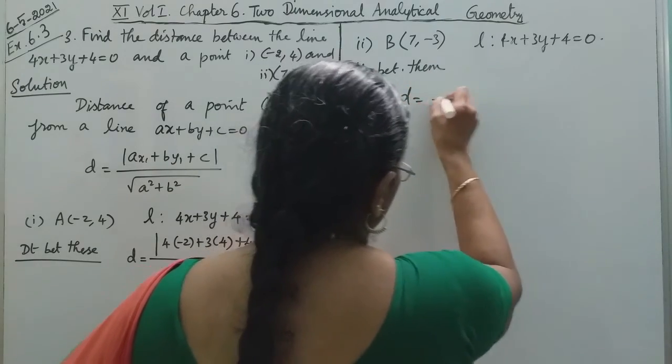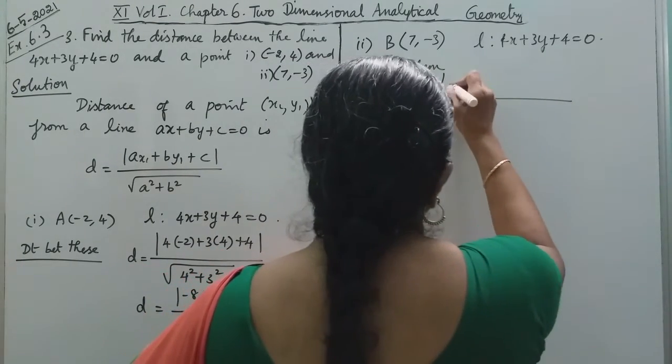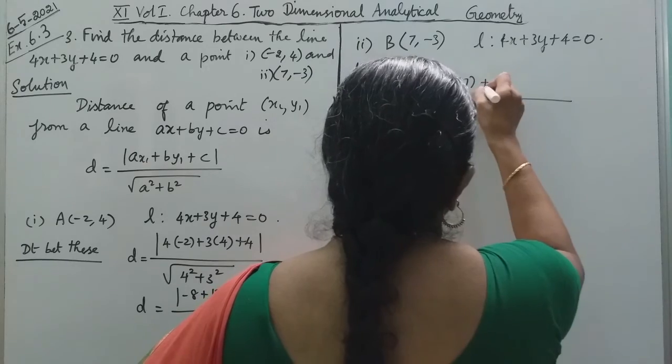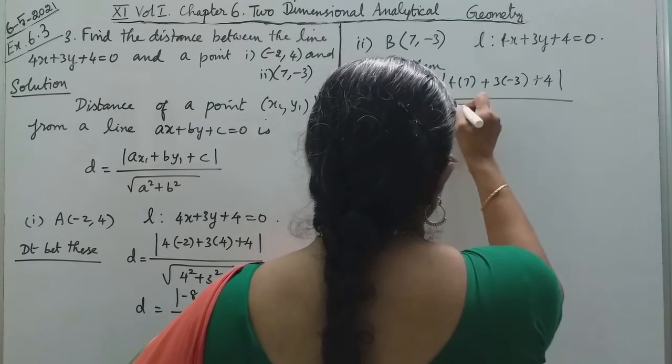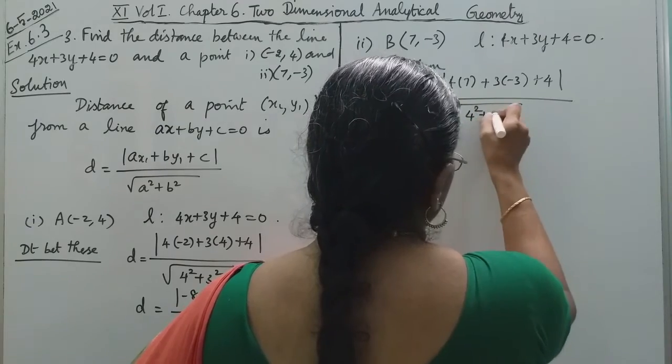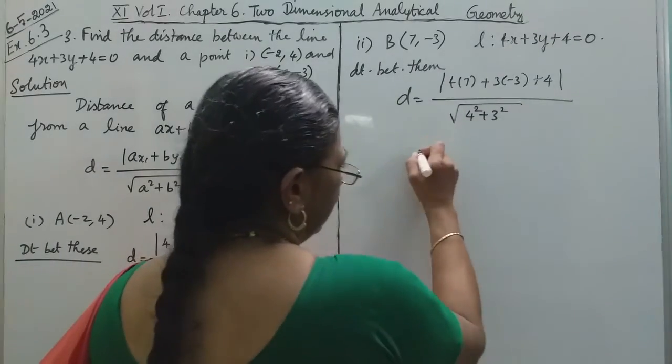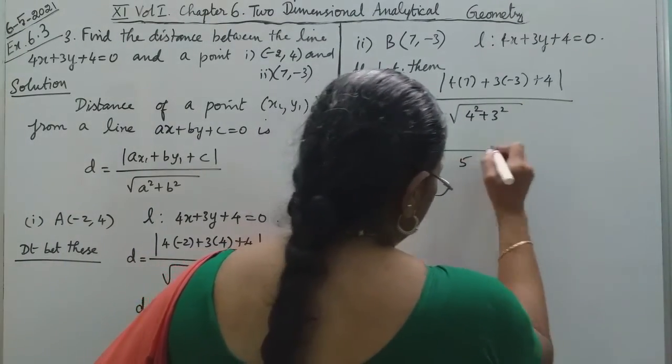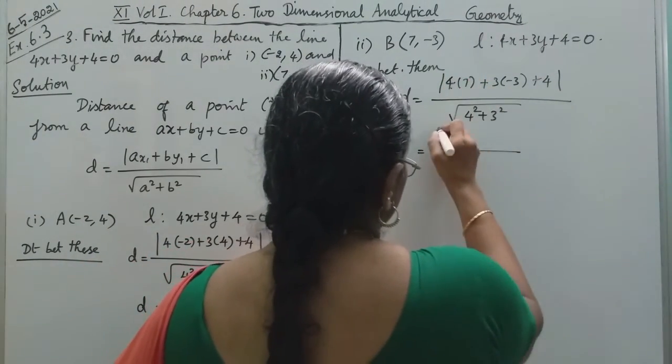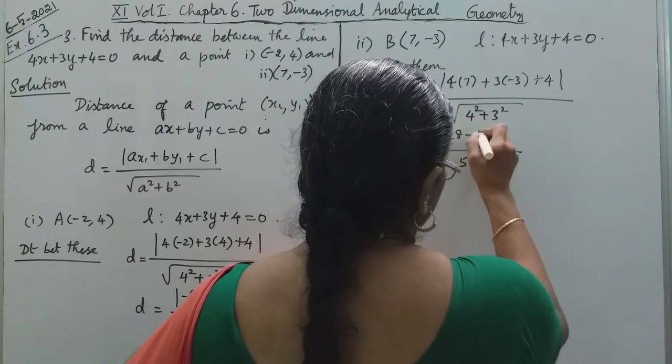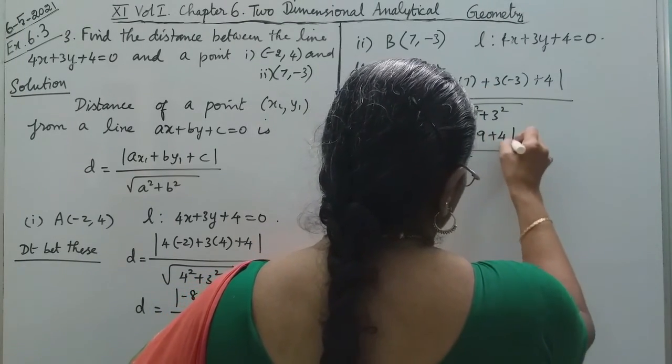D equals modulus of 4 times 7 plus 3 times minus 3 plus 4, divided by the square root of 4 squared plus 3 squared. The denominator equals 5. Now for the numerator: 4 times 7 equals 28, minus 9, plus 4.